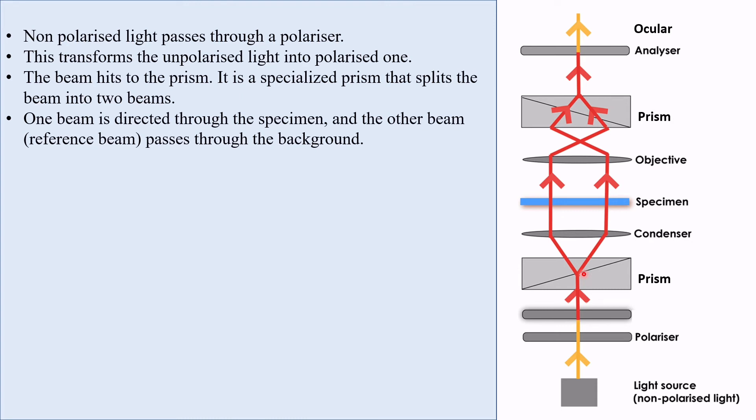One beam is directed through the specimen and the other beam passes through the background. Between two beams, one beam is directed through the specimen and the other beam, that is reference beam, passes through the background.